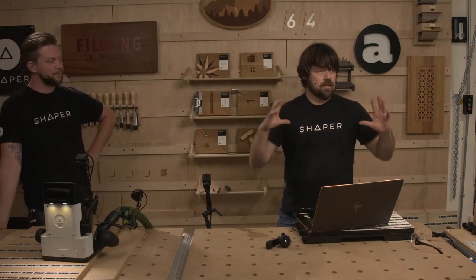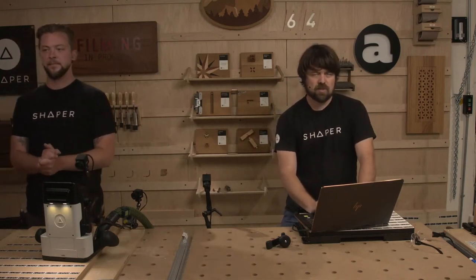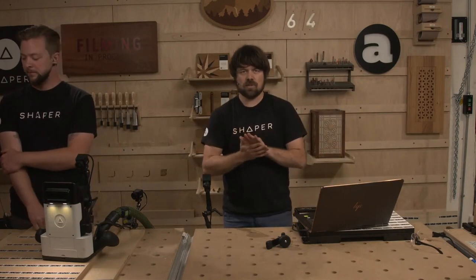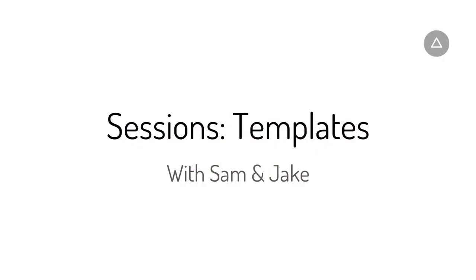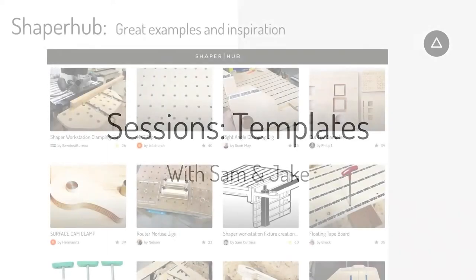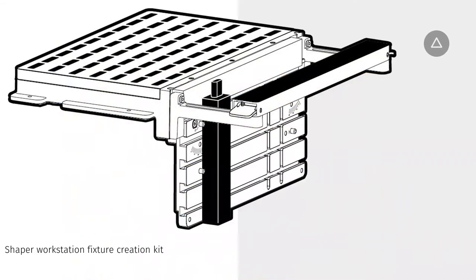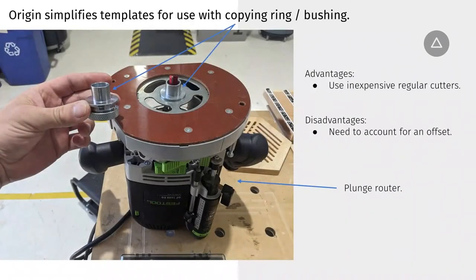We're next going to move on to the idea of a bushing template. Jake's going to be performing some cuts and walking us through how to use Origin to take a standard piece of geometry you've designed for cutting with Origin, and then maybe you want to use a copying ring or bushing that you would attach to a router. This enables you to use regular cutters — you don't need any little bearings on them.